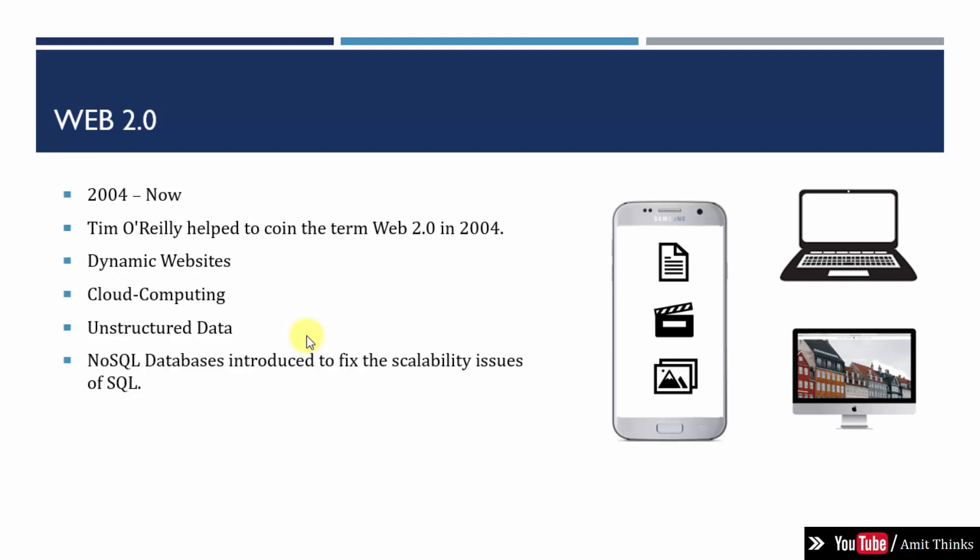Online shopping websites and travel websites also emerged, so people could log in, sign up, and book flights. At that time, unstructured data came into the picture — mobile data, laptop data, images, videos, and Facebook social media data including documents, images, videos, and other related files. All of this is considered unstructured data.